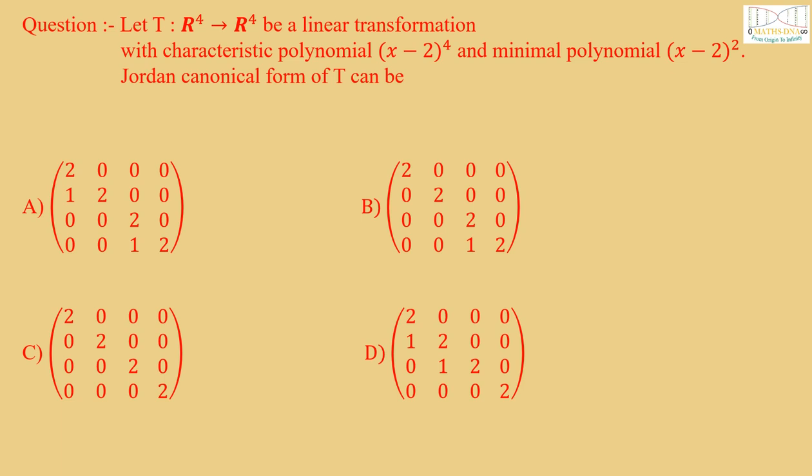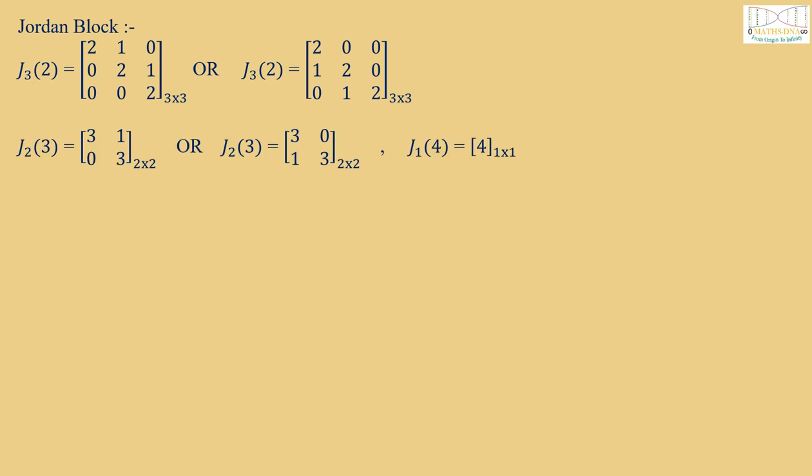Before we solve the question, let us understand what we mean by Jordan blocks and Jordan canonical form. Jordan block: Let me give you an example. J₃(2) means a Jordan block of order 3 with eigenvalue 2, whose diagonal entries are 2 and the super diagonal entries are 1. Also, J₃(2) can be written as a 3×3 matrix whose diagonal entries are 2, but below the diagonal we have entries 1 and 1.